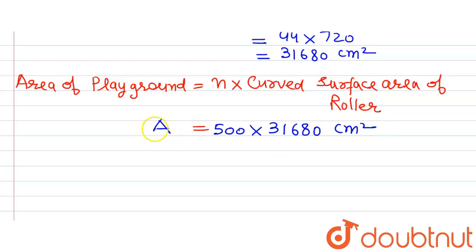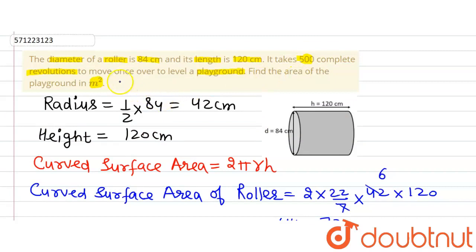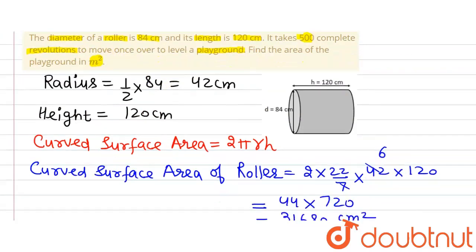Now, the curved surface area of the roller is 31,680. This area of playground is in cm square, but in the question we are required to get the area of playground in m square.